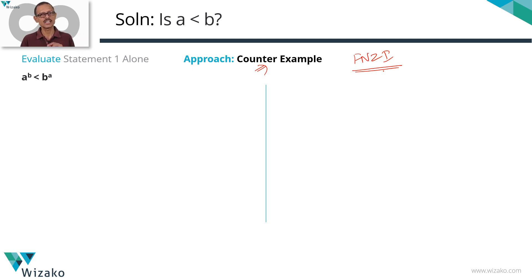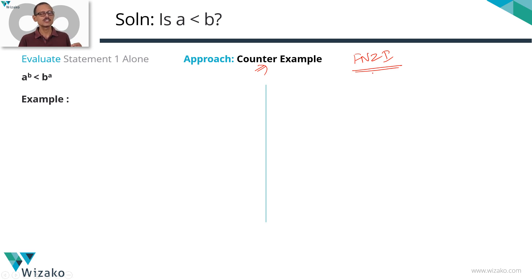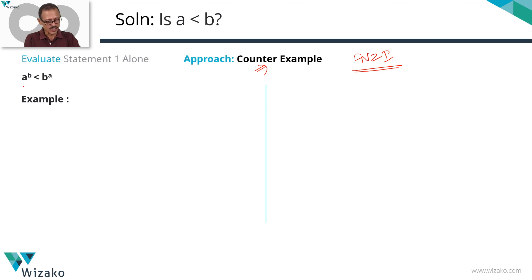Look for a case where it will work and a case where it will not work. Typically when we look for numbers we look at only integers, which is where things don't seem to have a counter example. If we look at fractions, negative numbers, negative fractions, and zero — those are places where counter examples could actually be hiding. Let's look at an example: let a = 1 and b = 10. Does this satisfy the condition a^b < b^a?